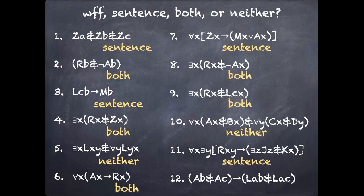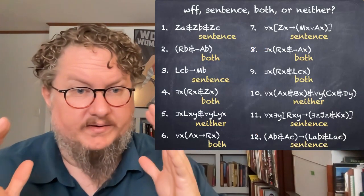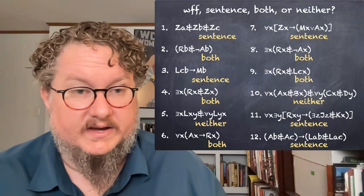Number 11 is a sentence using notational conventions. All of your variables are bound by the appropriate quantifier. So that's good on that realm. And then this last one is a sentence using notational conventions. And that is because it is missing those outside parentheses around the conditional.